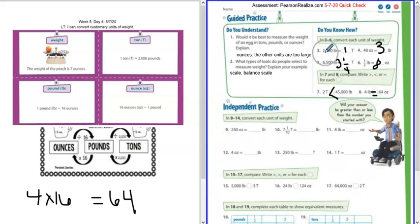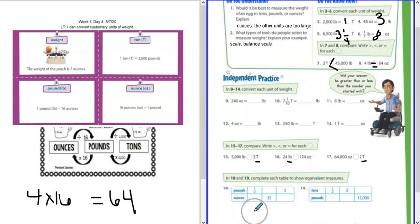So for nine through 14, you're going to be doing the exact same thing we did up here on numbers three through six using that conversion chart. Numbers 15 through 17, you're going to be converting the bigger unit to the smaller unit and then comparing to see which one's greater than, less than, or if they are equal. And then numbers 18 and 19, you're going to turn your pounds into ounces or your ounces into pounds. So these are going to go together. And that's the same thing here. You're going to do tons and pounds. So if you have your tons, you're going to turn it into pounds. If you have your pounds, you're going to turn it into tons. So you're just going to be going back and forth between these two and then on this one between pounds and ounces this way.